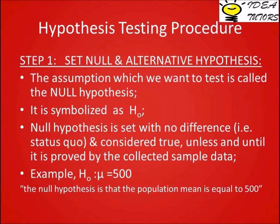Step 1: Set null and alternative hypothesis. The assumption which we want to test is called the null hypothesis, symbolized as H-naught. The null hypothesis is set with no difference and is considered true unless and until it is proved otherwise by the collected sample data. Example: H-naught — population mean equals 500, meaning the population mean is equal to 500.